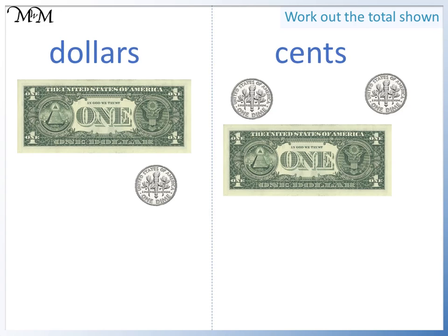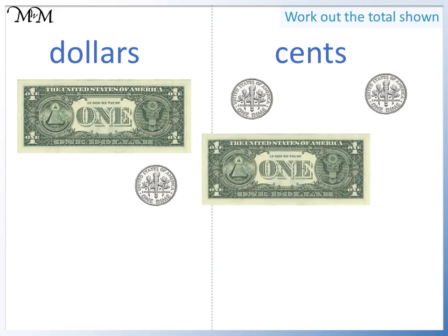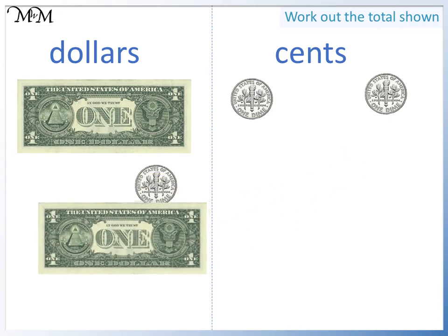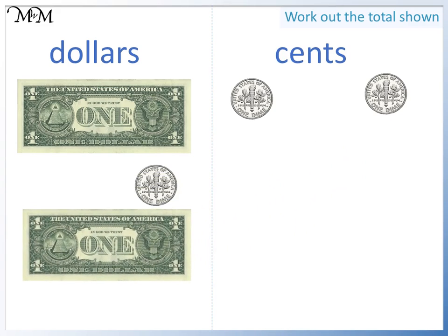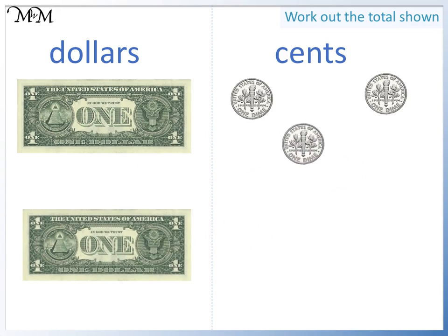We can move the one dollar bill over to the dollars and we can move the dime over to the cents. Starting with the dollars, we have one, two — two dollars. Looking at the cents, we have one dime, which is worth ten cents.